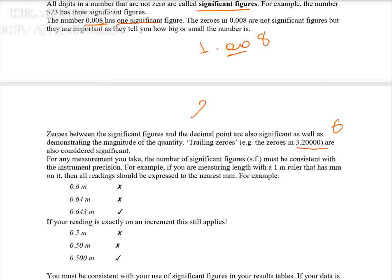For example, if we write 205, there is no decimal point, but zero is between two significant figures. In this case the zero is considered a significant figure. Therefore 205 has three significant figures.